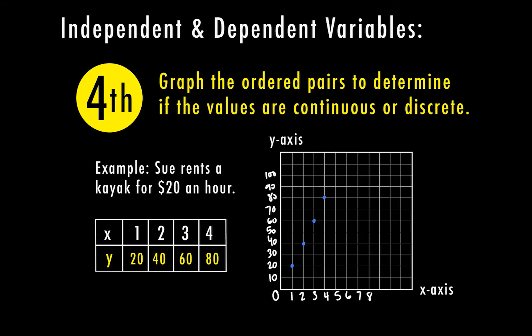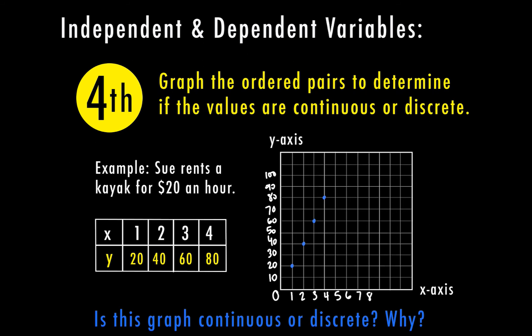Even though she's kayaking the entire time, does she get a certain rate based on how long she kayaks in minutes? If she stops before the hour is over, she still has to pay for the full hour. So these dots are not going to be connected because she's getting charged for every hour that she uses the kayak at $20 an hour. This graph is discrete because she's not getting paid for the number of minutes she kayaks — she pays per hour regardless of how long she actually uses the kayak.